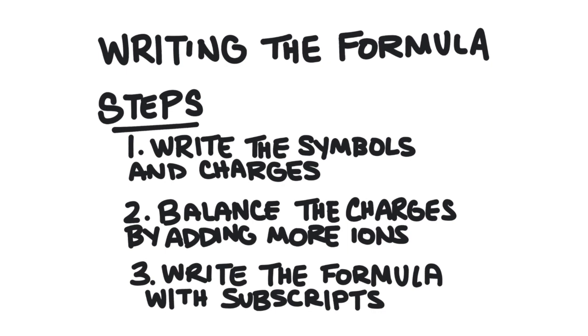We can follow these three steps in order to write the chemical formula for these compounds. First step is that we're going to write the symbols and charges of the ions that are making up the compound. The second step is to balance those charges out. We need the positive and negative charges to be equal to each other, so we can add more ions in order to get that balancing of the charges. The third step is to just write the formula with subscripts that are going to identify how many of each ion we need.